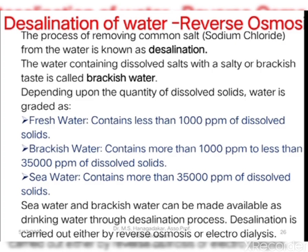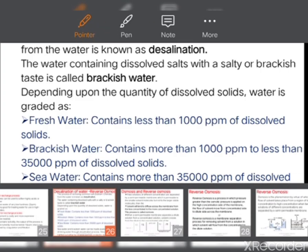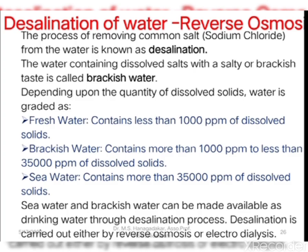Water is graded into three types: fresh water, brackish water, and sea water. Fresh water contains less than 1,000 ppm of dissolved solids. Brackish water contains more than 1,000 ppm of TDS and less than 35,000 ppm of TDS. Sea water is one where the concentration of total dissolved solids is more than 35,000 ppm.